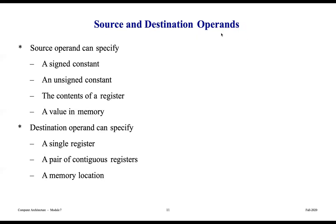Source operands can specify one of four different things: a signed constant, an unsigned constant, the contents of a register, or a value in memory. A destination operand can specify a single register, a pair of contiguous registers, or a memory location. How does a processor know whether an operand specifies a constant, a register, or a memory address? Each operand has a type that tells the processor how to interpret it.